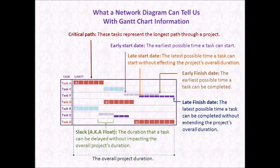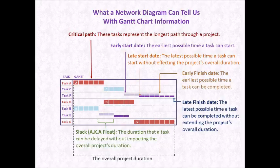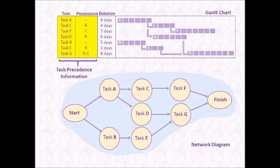Some of the benefits of the network diagram is it highlights which tasks determine the overall duration of the project. These tasks are usually what we consider the ones that are on the critical path. And it shows the earliest start dates the tasks can begin and end. It also shows how long they can be delayed or how much slack is within a task — when the latest a task could begin without affecting the overall duration of the project. This information is not available in some of our other scheduling techniques and is very useful to the project manager. So let's now look at a very simplistic network diagram.